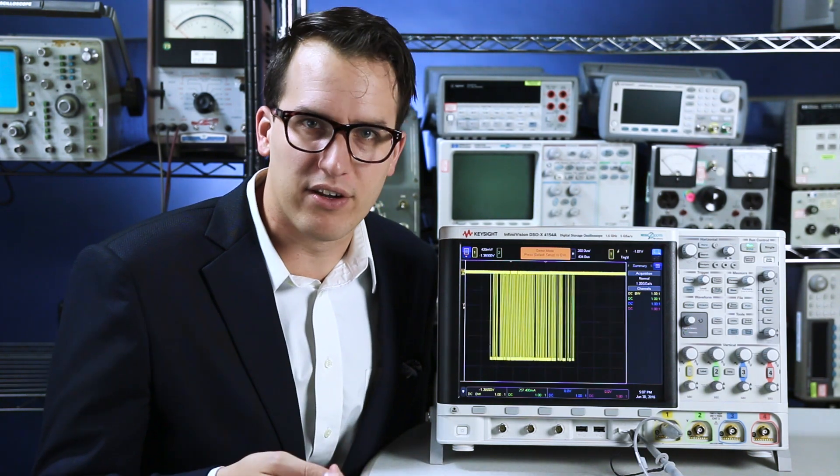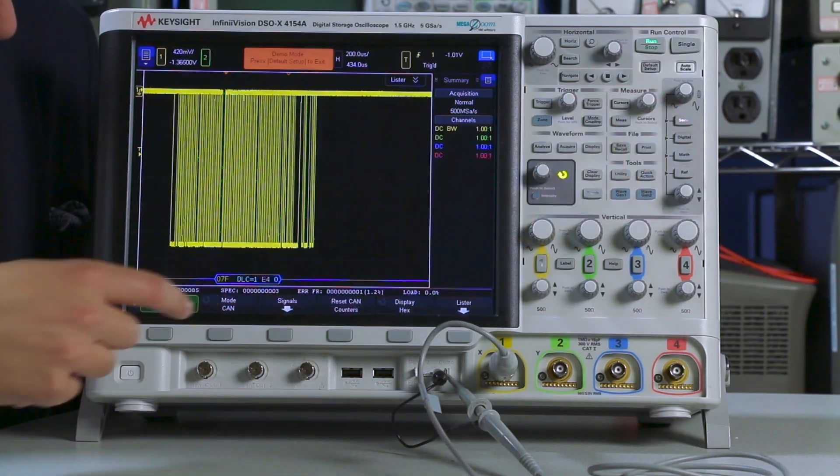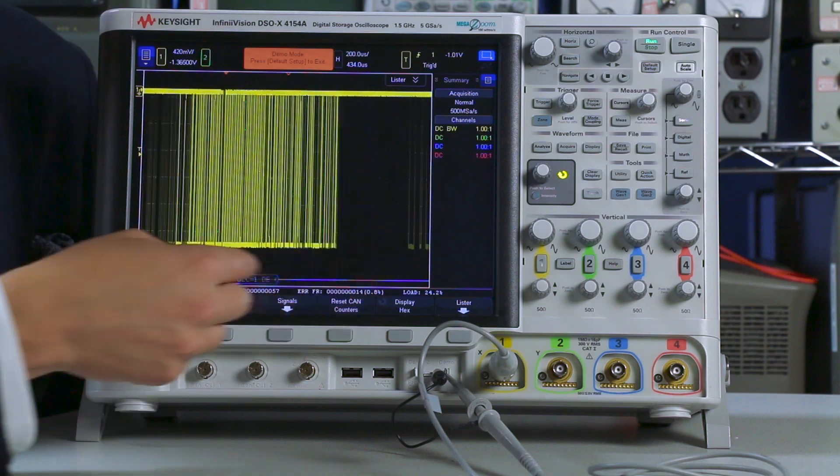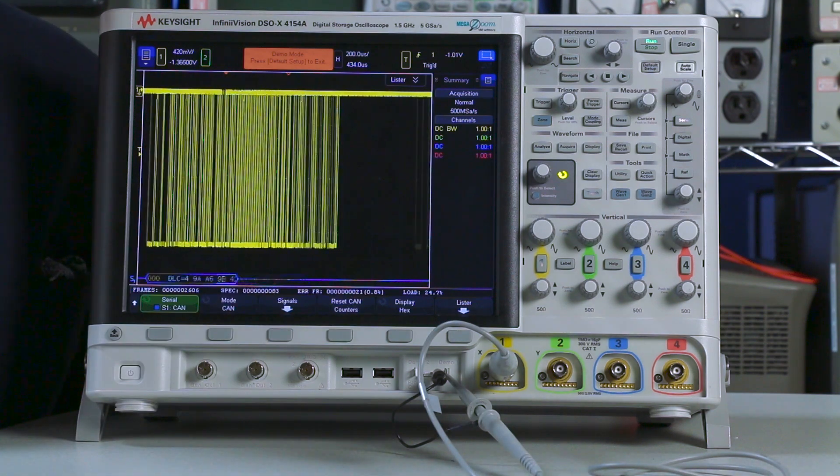So once you're physically connected to your signals, you're going to want to turn on serial decoding. So I'm going to hit the dedicated serial button, and that's going to turn on my decoding and I can see along the bottom, I have a little packet view of what's going on on this signal.